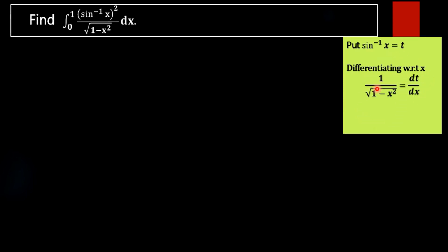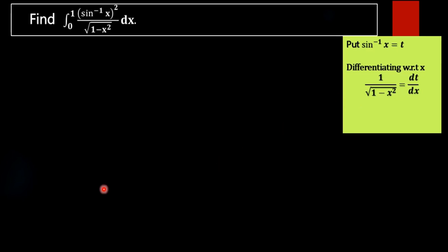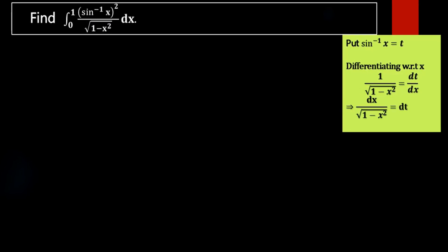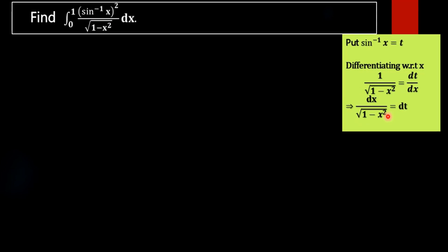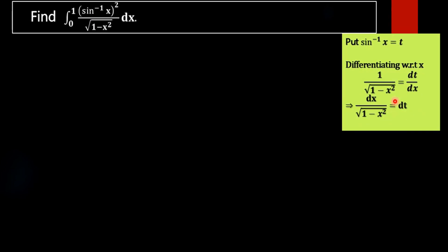The derivative of sin inverse x is 1 by root of 1 minus x squared, which is equal to dt by dx. This implies dx by root of 1 minus x squared equals dt. So we get the function expressed in terms of t.